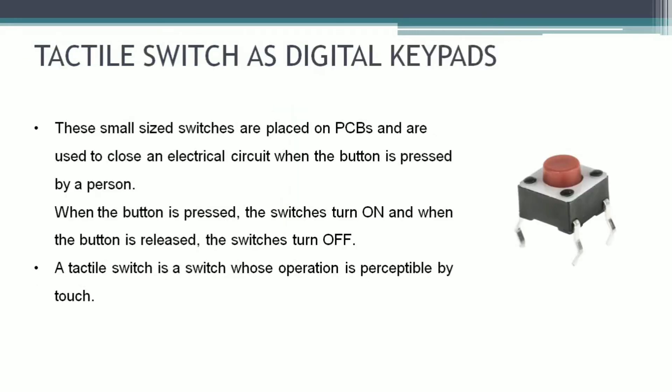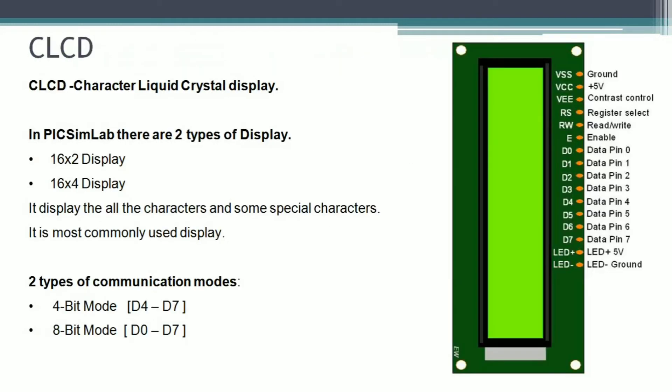The next peripheral is the tactile switch, also known as digital keypads. These small-size switches are placed on the PIC Genius board and are used to close an electric circuit when the button is pressed by a person. When the button is pressed it turns the switch on, and when the button is released it turns the switch off. The tactile switch is used to switch operations that are visible as such. It is connected to Port B of the PIC microcontroller.